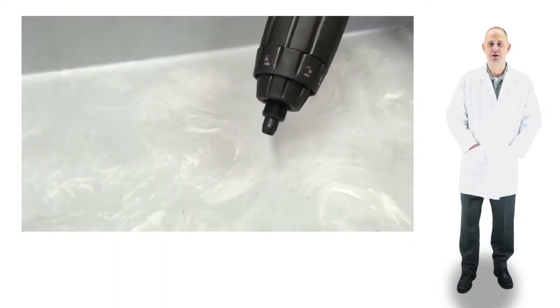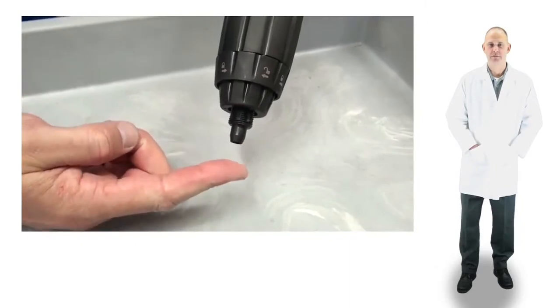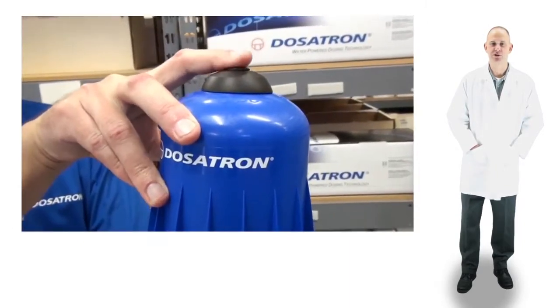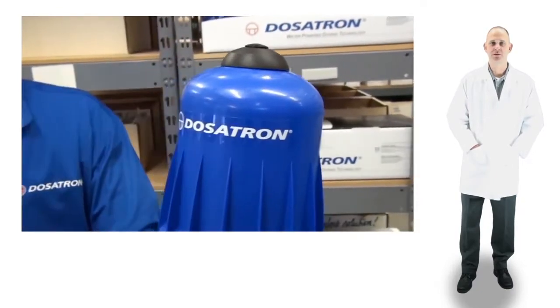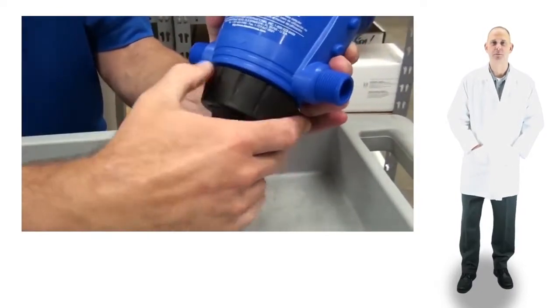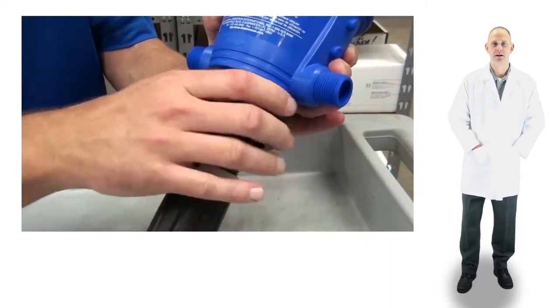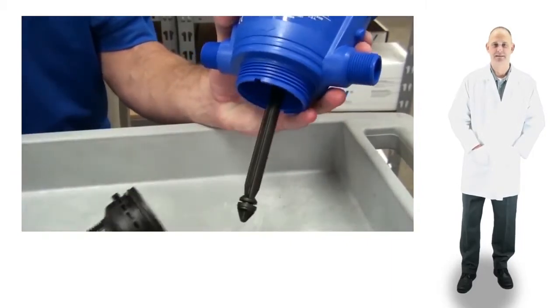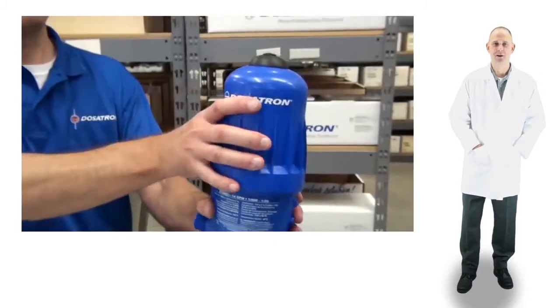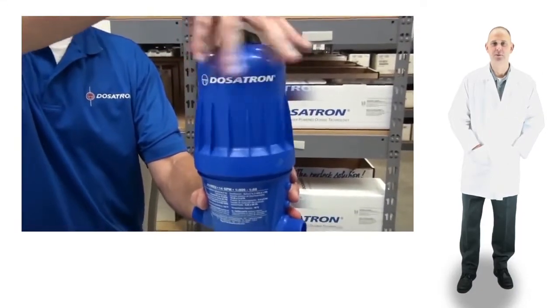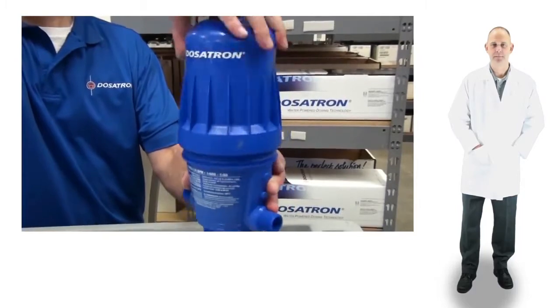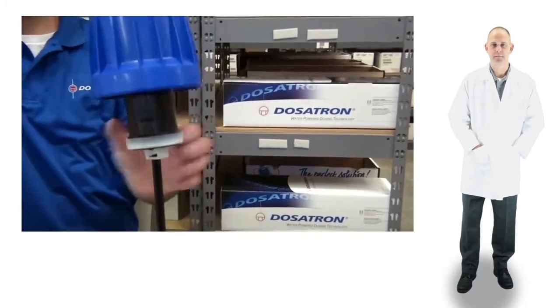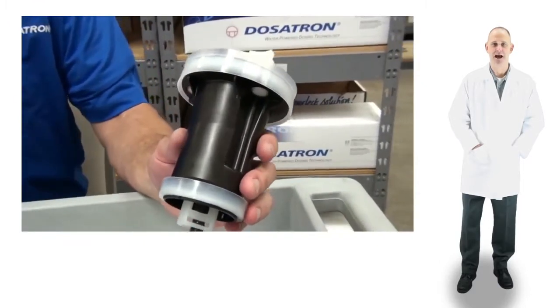If you don't feel suction on your finger, turn the water off, release pressure by pressing the air bleed button and remove the Dosatron. Unscrew the injection stem nut and pull the stem straight out from the body. Set the nut and stem aside. Unscrew and remove the bell housing and pull the piston out of the body. Set the bell housing and body aside.